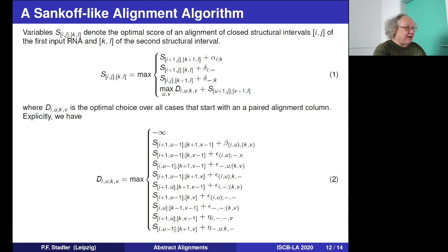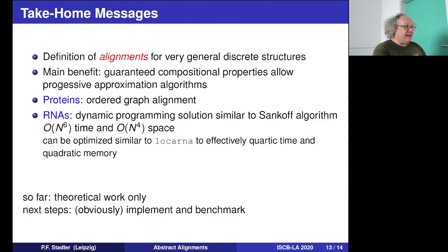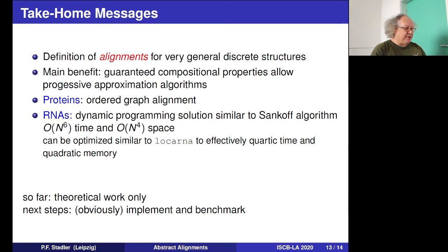With this decomposition, we get a dynamic programming algorithm that allows us to compute these alignments in polynomial time. This looks like the Sankoff algorithm — I will not go through the details of these recursions, I give them here just for completeness. The key point is that we can use this definition of alignments for very general discrete structures. Compositional properties allow progressive alignment algorithms to produce large alignments of many sequences. For proteins we get general ordered graph alignments, and for RNAs we get dynamic programming solutions similar to the Sankoff algorithm, running in polynomial time.